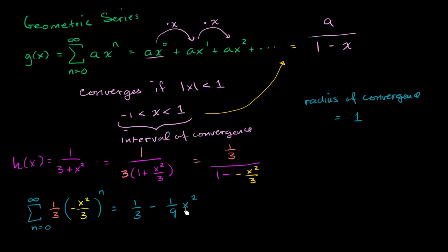To go from that to that, you have to multiply by negative 1/3, and we multiply by x² as well. Now in our next term, we're going to multiply by negative x²/3 again.